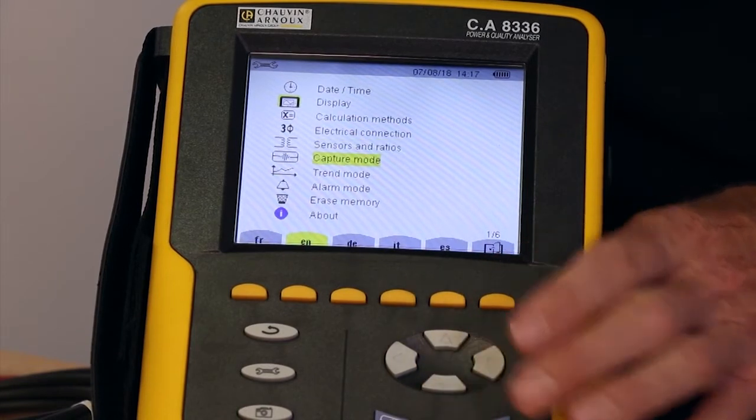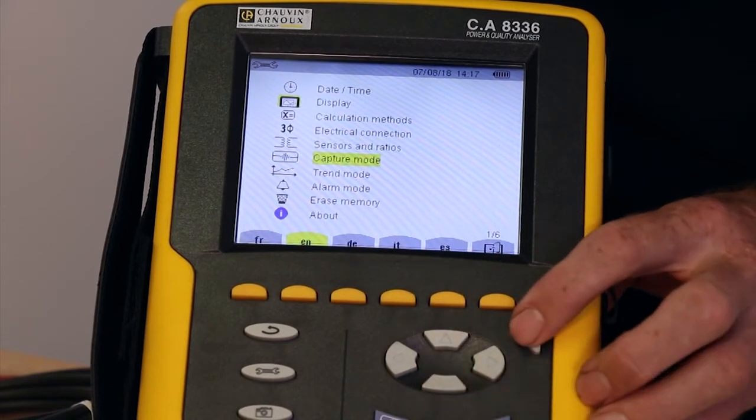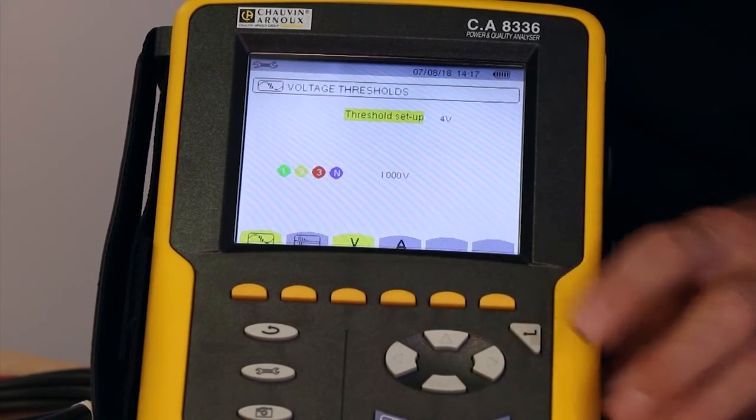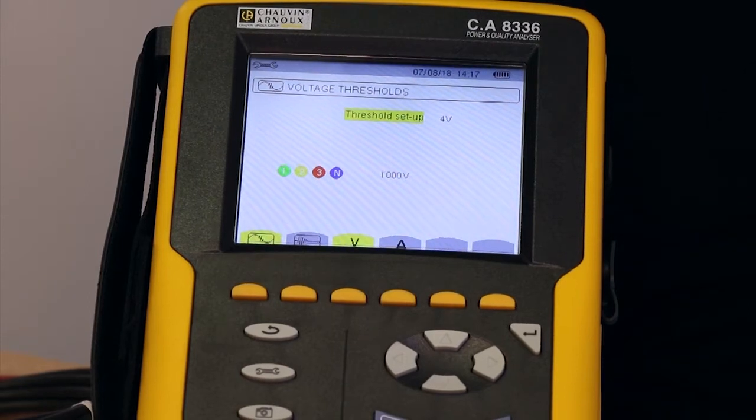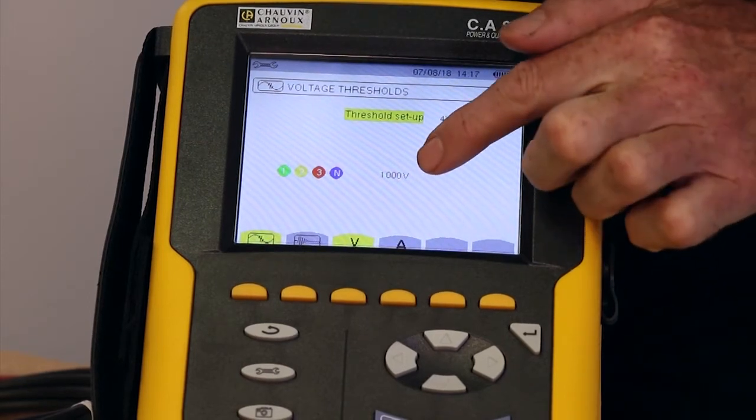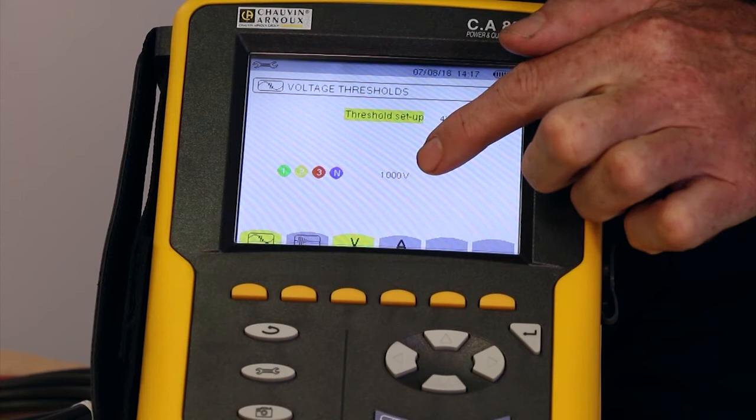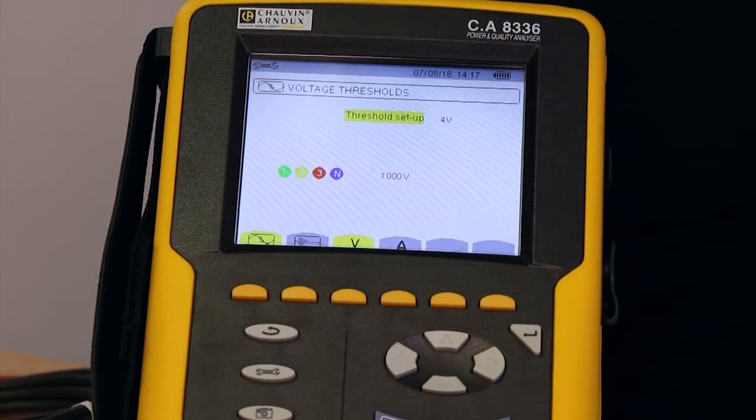The next key position down allows us to set a threshold for transients. This is called capture mode. In other words, when recordings will be triggered by an over-voltage, the level of which is decided by the user. I can select any level I want. So here I'm selecting to see only transients that are above 1000V.